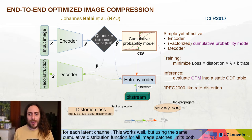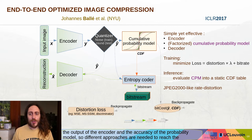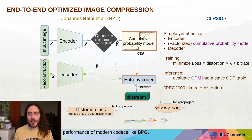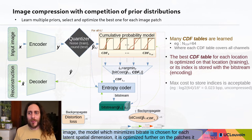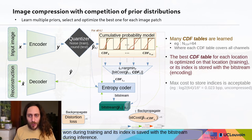This works well, but using the same cumulative distribution function for all image patches limits both the output of the encoder and the accuracy of the probability model. Our proposed approach is to train many cumulative probability models as a competition of prior distributions. After encoding the image, the model which minimizes bitrate is chosen for each latent spatial dimension. It is optimized further on the patches it won during training, and its index is saved with the bitstream during inference.